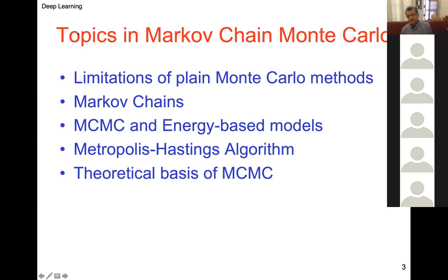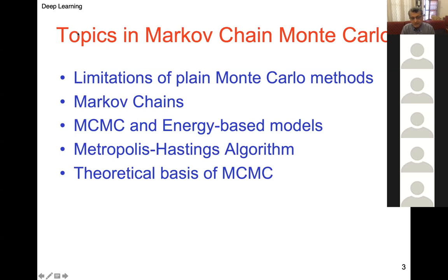Why do we choose an energy-based formulation for MCMC? MCMC requires states not to have zero probability, because if a state has zero probability you get stuck and cannot move. Energy-based models represent a probability distribution with an exponential that doesn't go to zero — just some very small number. So energy-based models are appropriate for MCMC. Then we define the general approach called Metropolis-Hastings. Gibbs is only a special case of that, and Metropolis-Hastings is the more general method widely used in statistics.